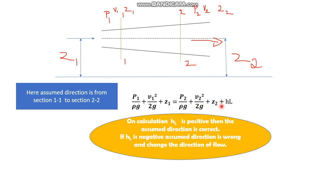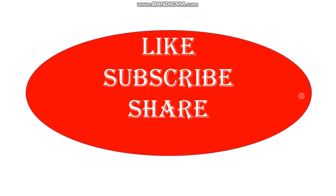If we calculate hl and get a positive answer, then the assumed direction of flow from section 1-1 to section 2-2 is correct. If the hl value comes out negative, then the assumed direction of flow from section 1-1 to section 2-2 is incorrect, and we must state that the actual direction of flow is from section 2-2 to section 1-1. That's all about Bernoulli's equation for real fluids.